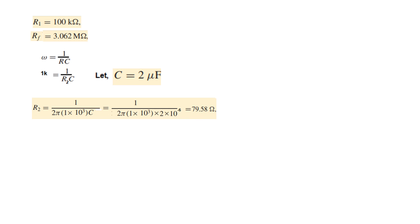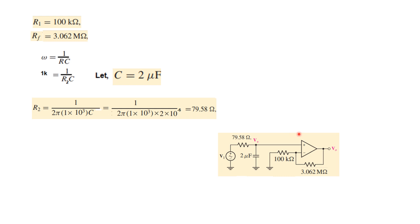Our net circuit will look like this: R2, the capacitance, R1, and RF. I hope this gives you an understanding of how to solve active filter problems — especially first-order active low-pass filters. Thank you.